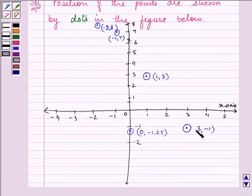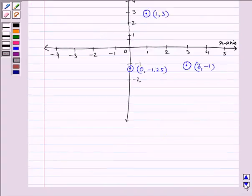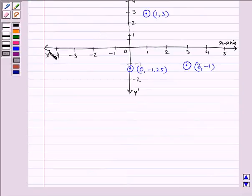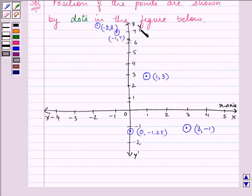This is (3, -1). So we have successfully plotted all the graphs on the plane and this completes the entire question that was given to us. This is y dash, x dash, x and y.